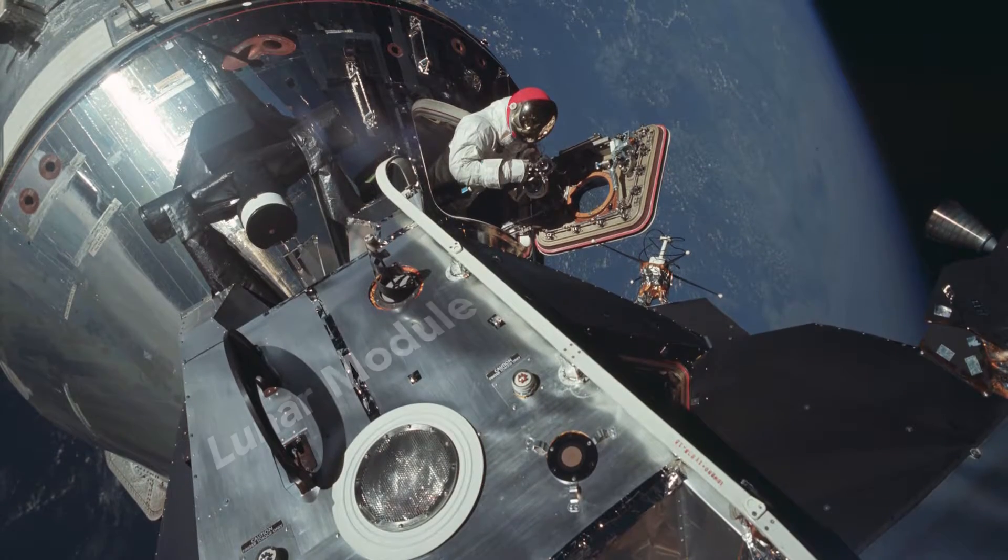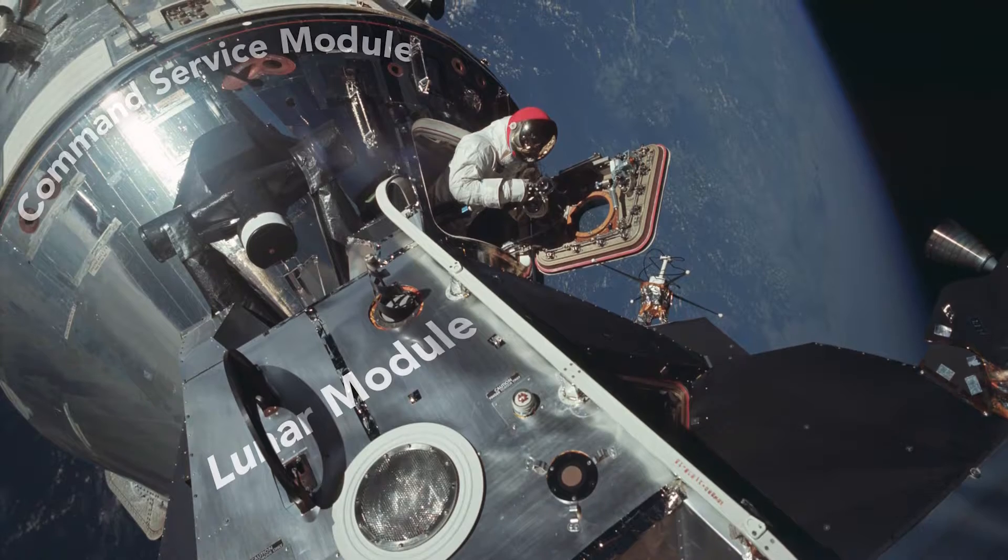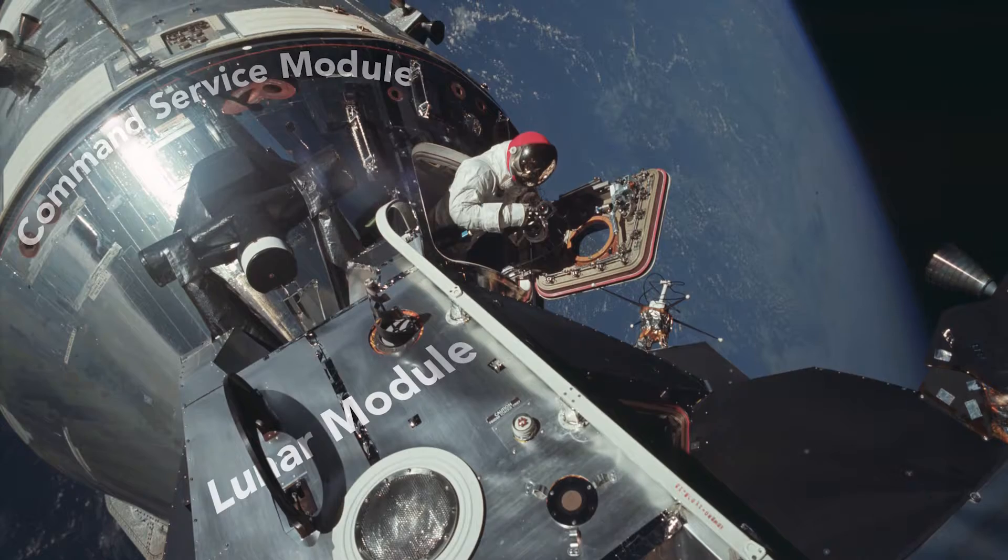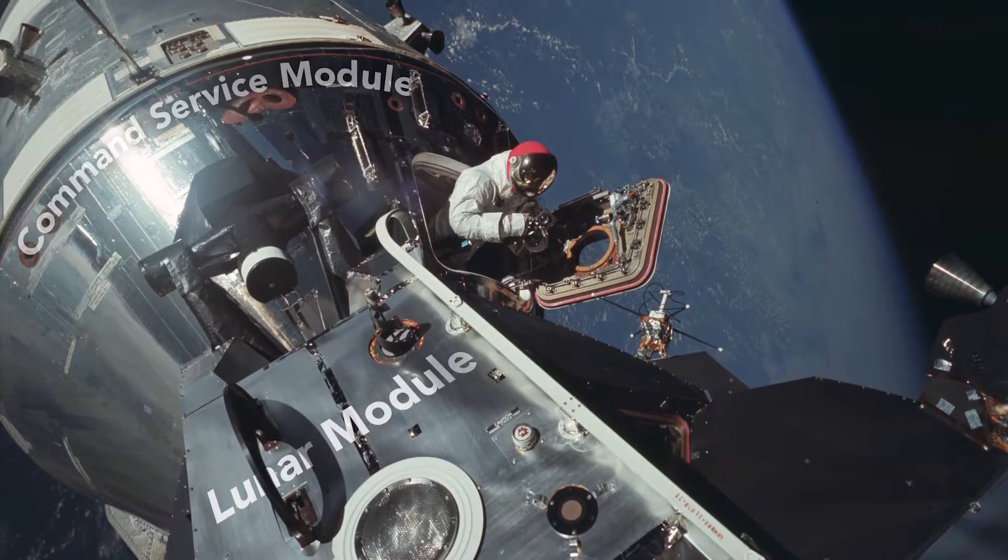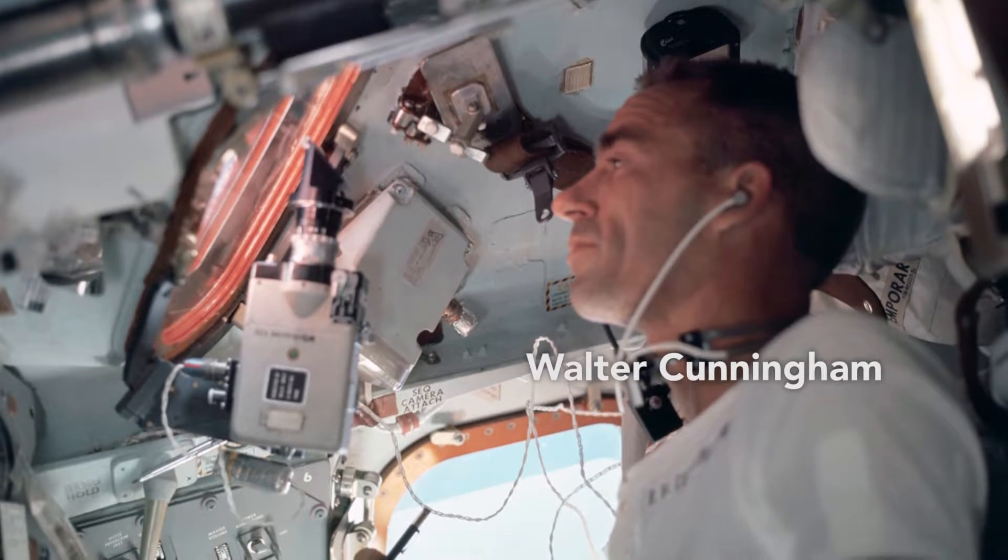All Apollo spacecraft, whether the lunar module or the command service module, were navigated by reference to what NASA called the Basic Reference Coordinate System, where the location of stars and other celestial objects were defined relative to the Earth or the Moon. The key was to align the coordinate system assigned to each spacecraft to this basic reference coordinate system.